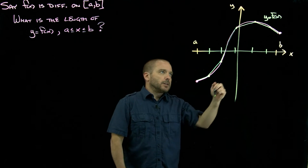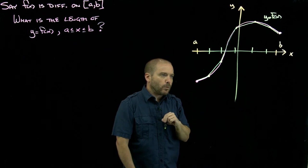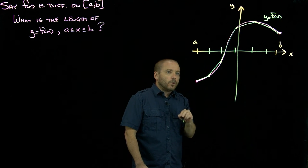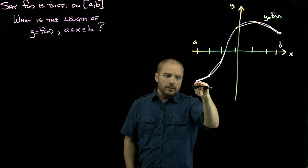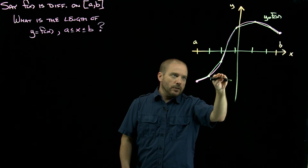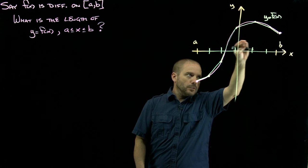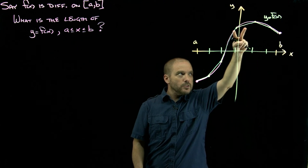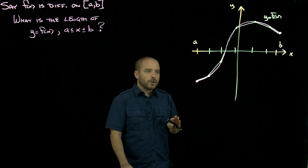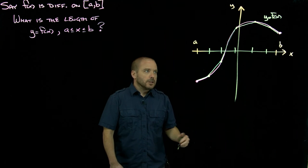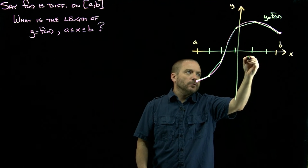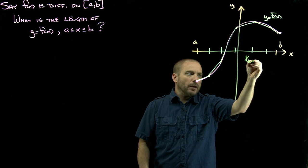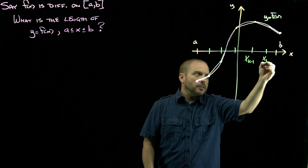The first thing to notice is that this is different than when we did area or volume. We're not making the function constant, so it's not a series of horizontal line segments. It's actually the slope that we're fixing. Over each one of these sub-intervals, the slope is thought of as being a constant. Let's look at one of these sub-intervals, x sub k minus 1 to x sub k.